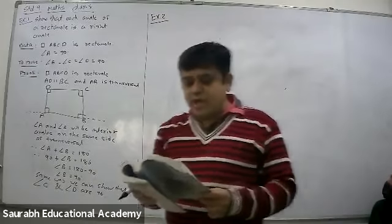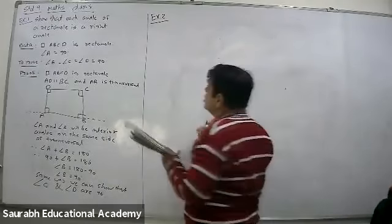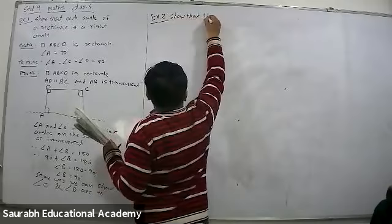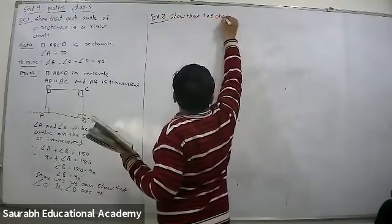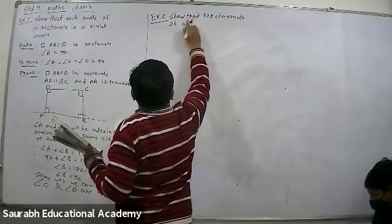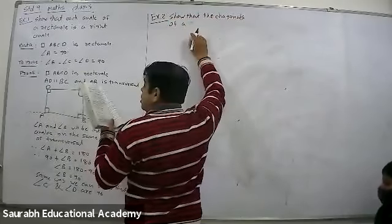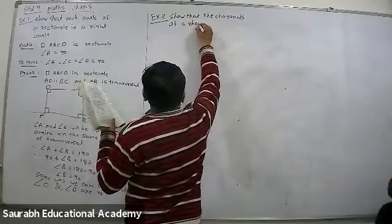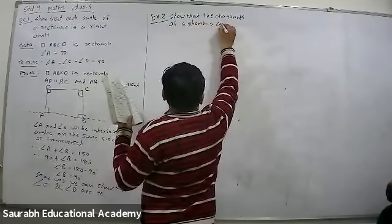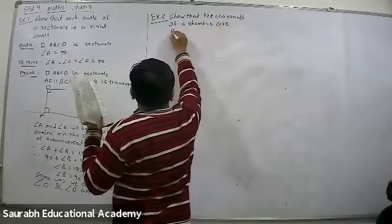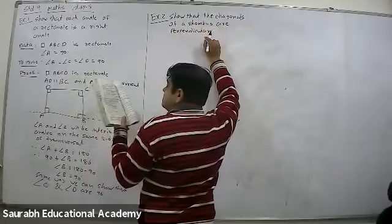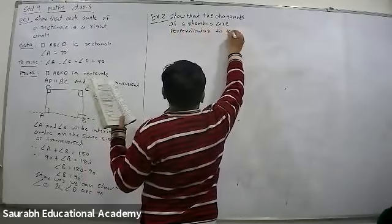Show that the diagonals of rhombus are perpendicular to each other. Show that the diagonals, the diagonals of rhombus are perpendicular to each other.